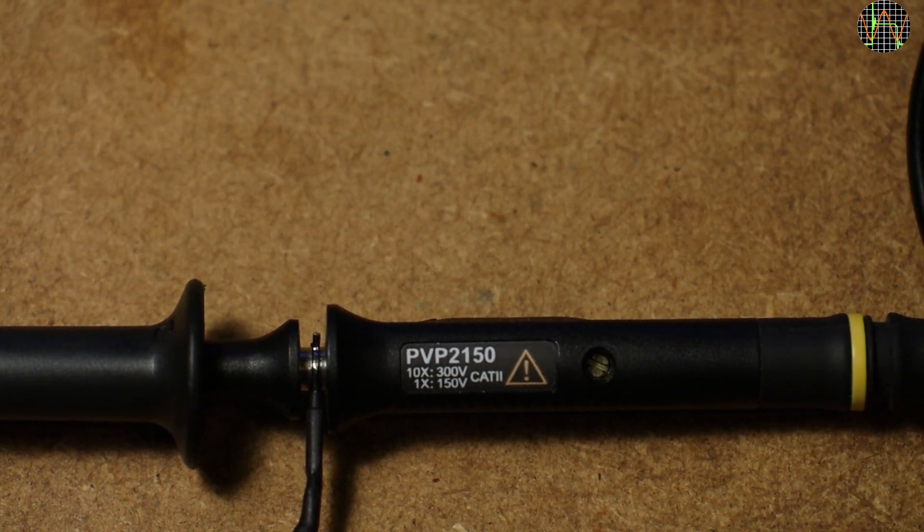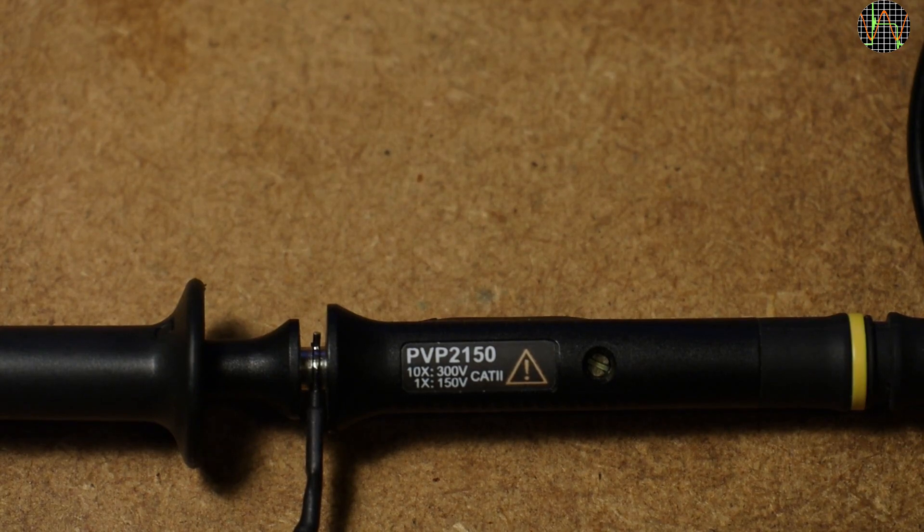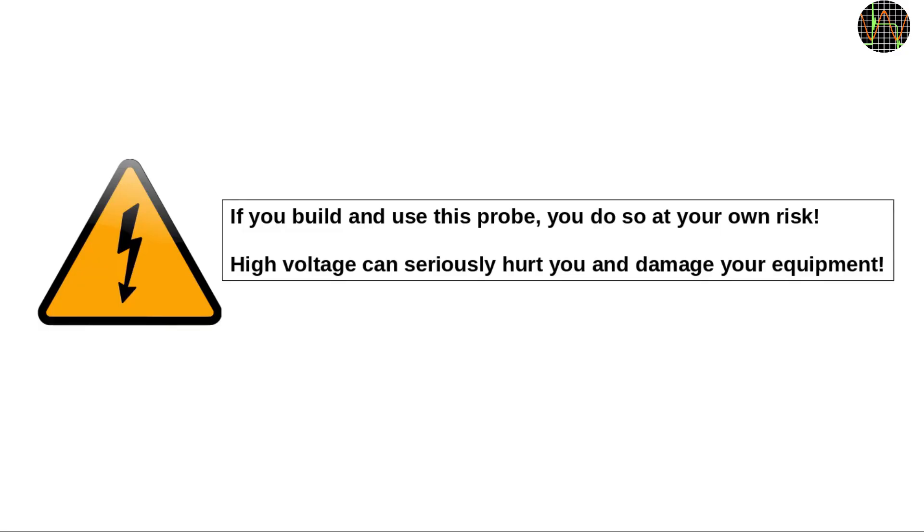Let's fix that and build a divide by 1000 probe that can handle at least 10kV DC. But before we go any further, let's be clear: if you build and use this probe you do so at your own risk. High voltage can seriously hurt you or damage your equipment.